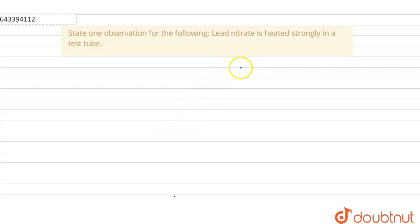question where we have to state one observation when lead nitrate is strongly heated in a test tube. Let's start by writing the reaction for this. Basically, the reaction is